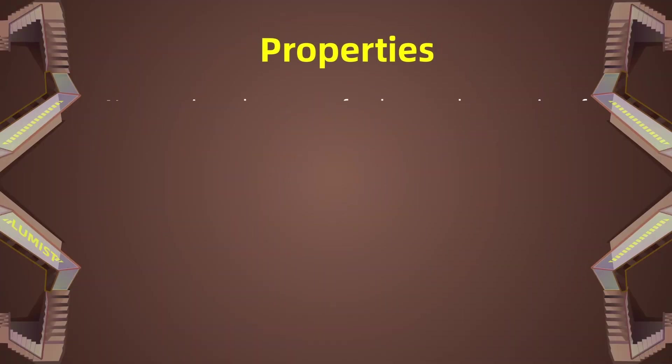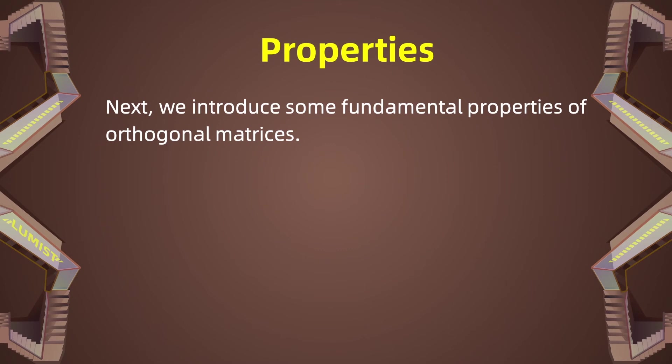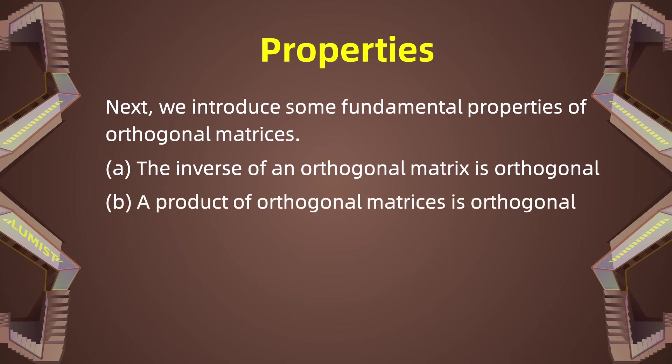And here we present the most important properties. The first one says that the inverse of an orthogonal matrix is also an orthogonal matrix. Moreover, if you have two orthogonal matrices and you multiply them, the result is also an orthogonal matrix. Finally, if you have an orthogonal matrix A, then its determinant is always 1 or minus 1.